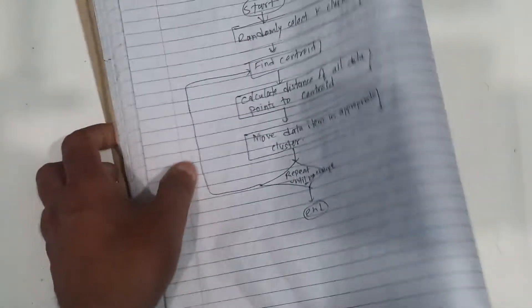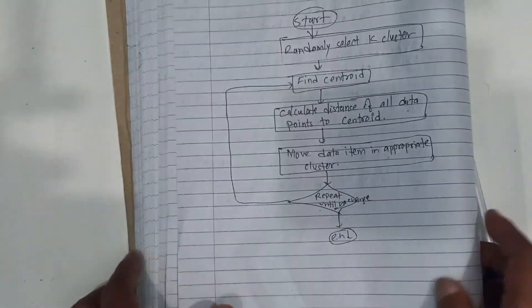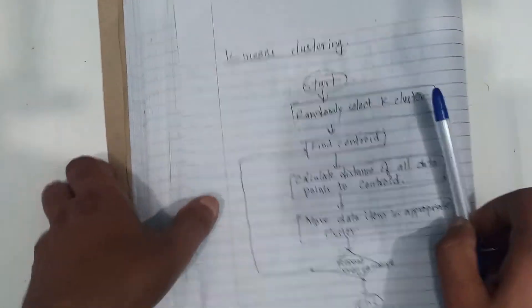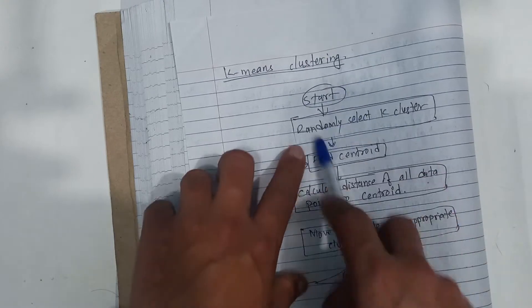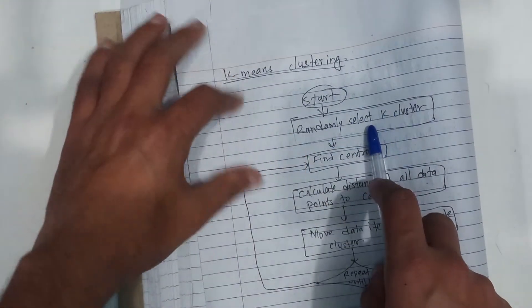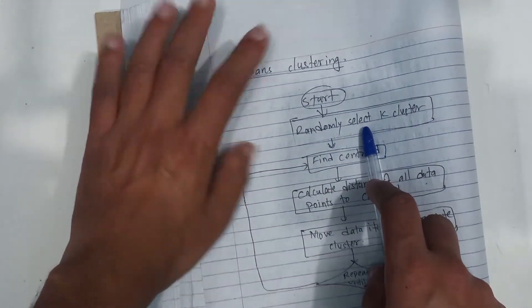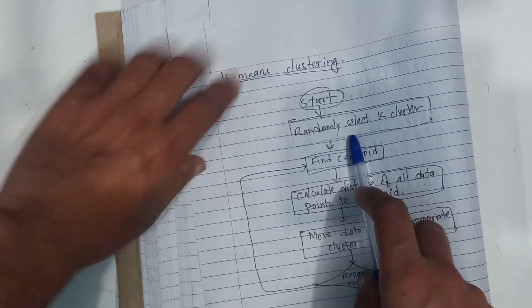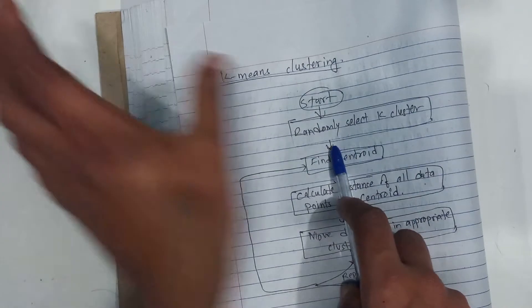K-means clustering algorithm. Let's learn about this algorithm. K-means clustering starts by randomly selecting K cluster data points.